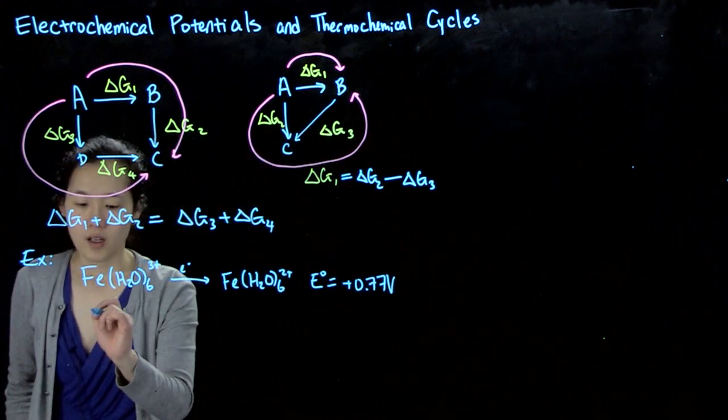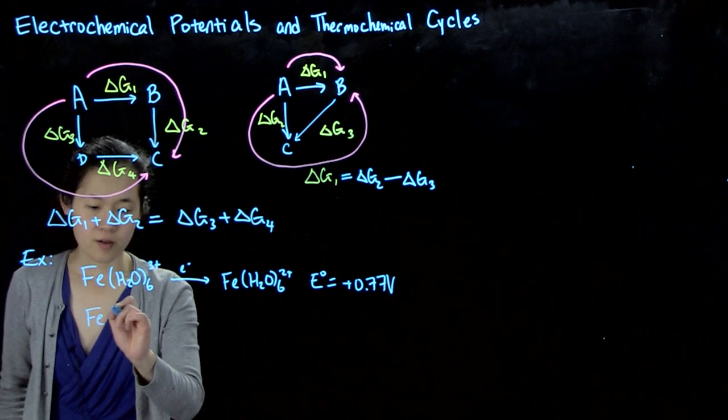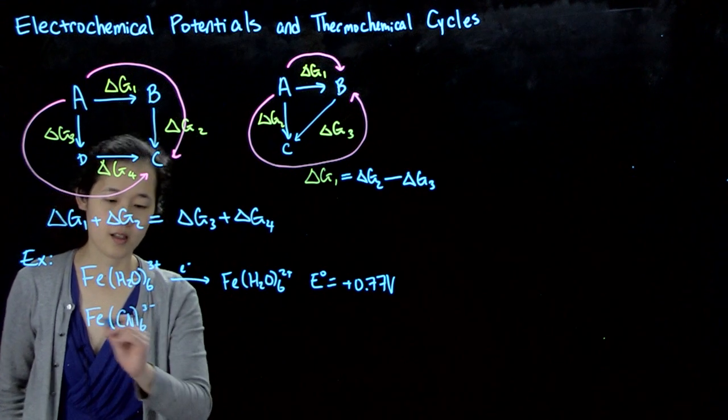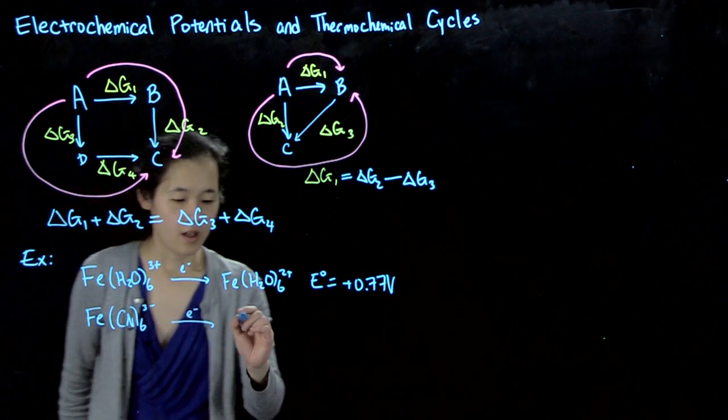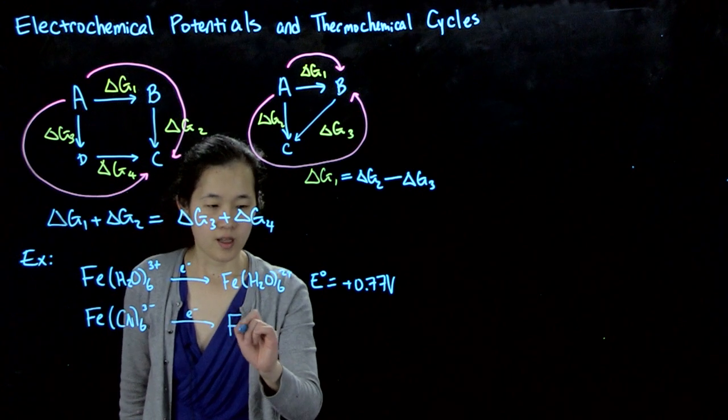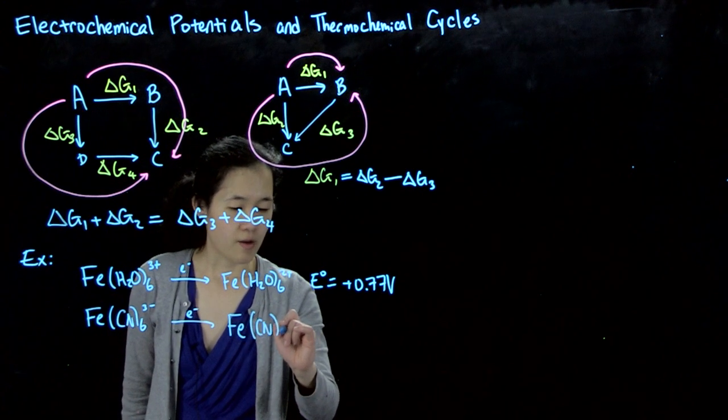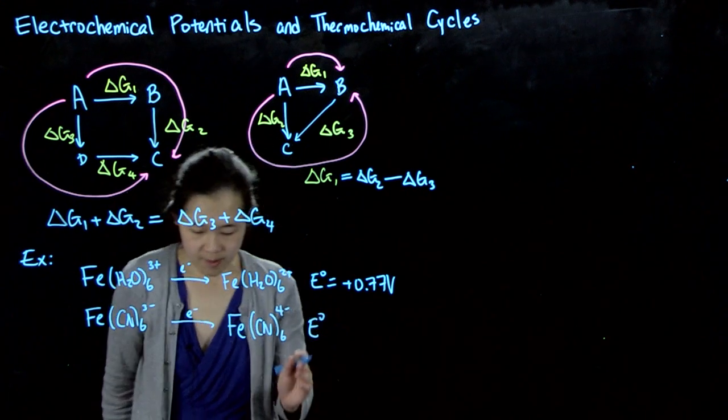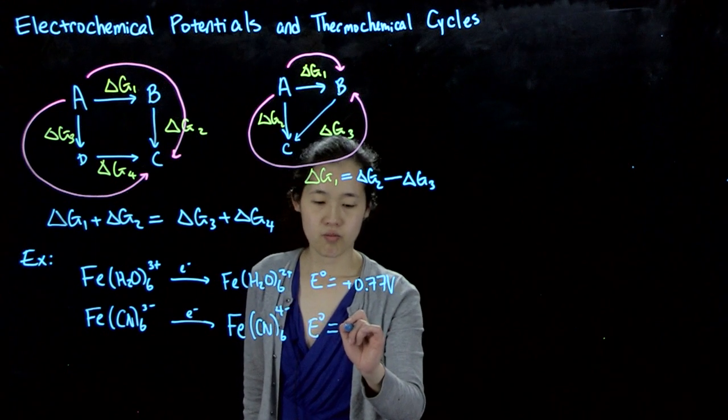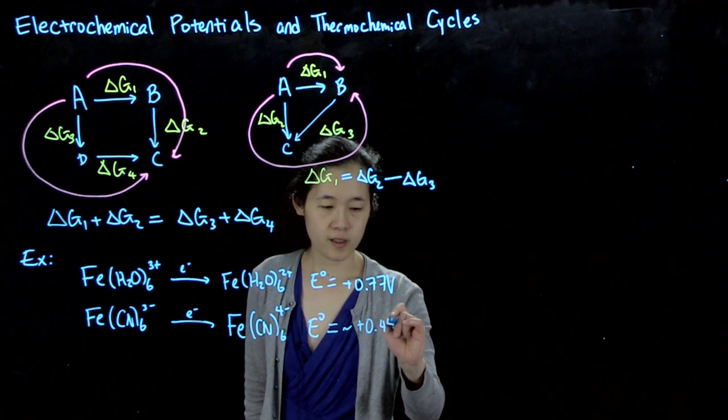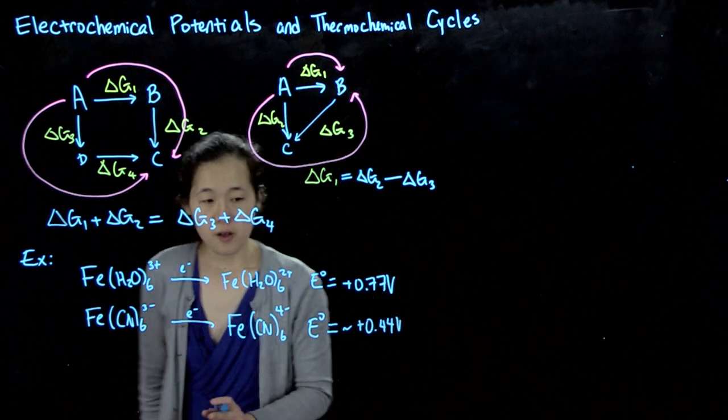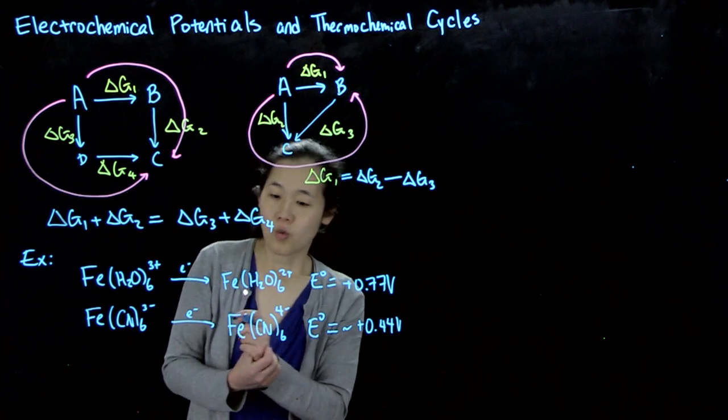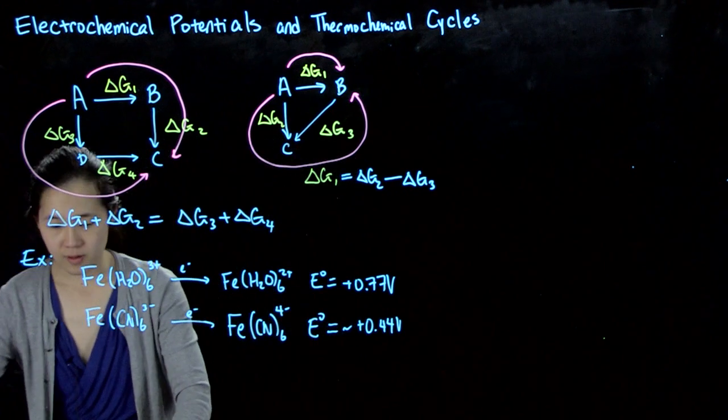And then if we know that the hexacyanoiron(III) 3 minus, this could also be reduced by an electron and then we could get to ferrocyanide 4 minus. This has a potential in the literature about positive 0.44 volts. So if we know these respective potentials, what does that tell us about the chemistry? So one question would be which compound is more stable? So here's my question.